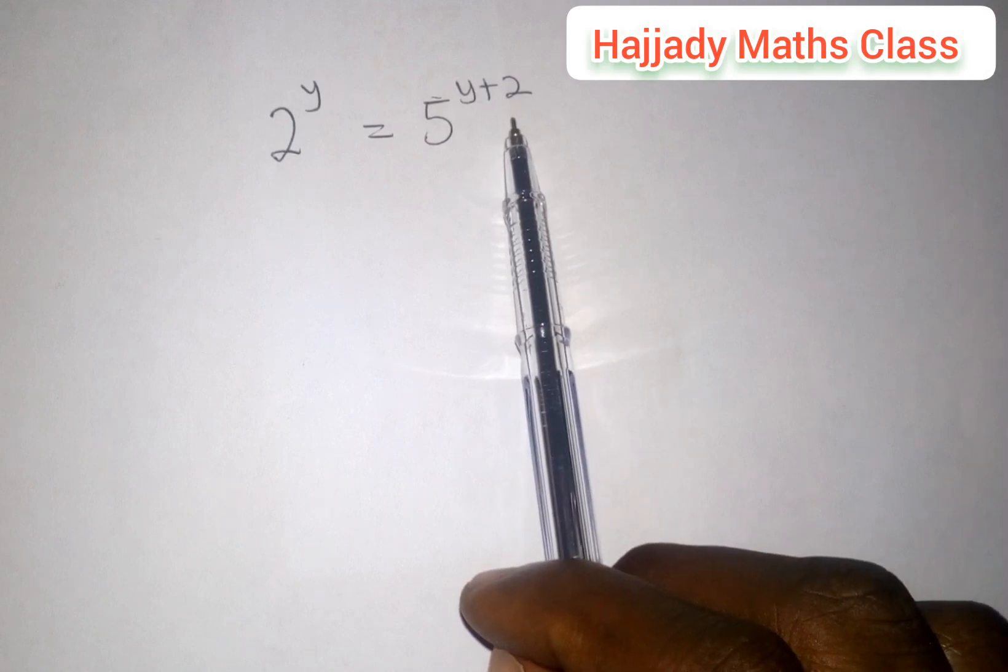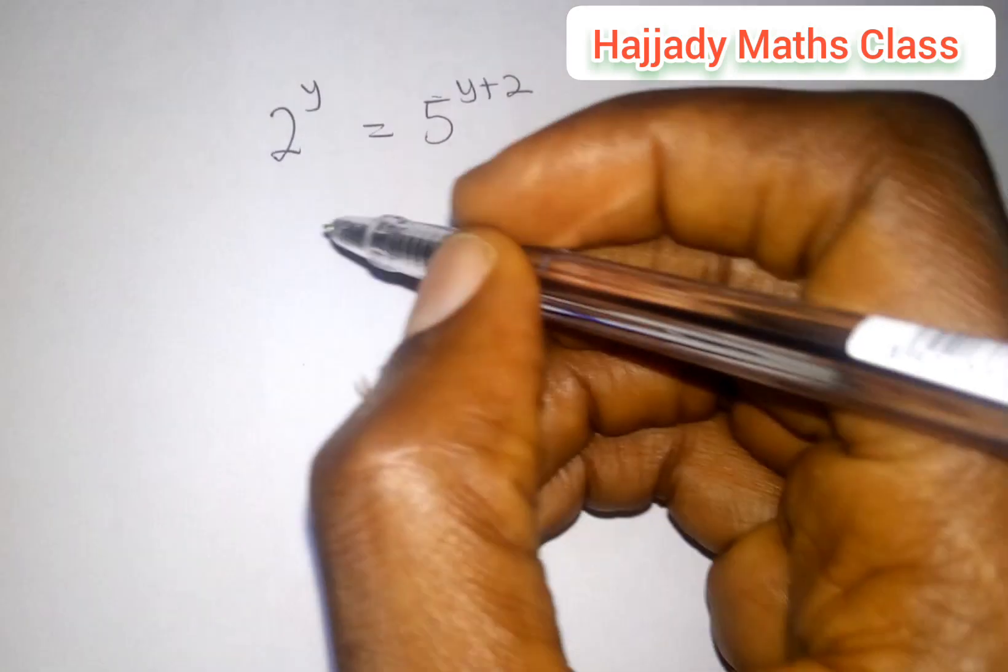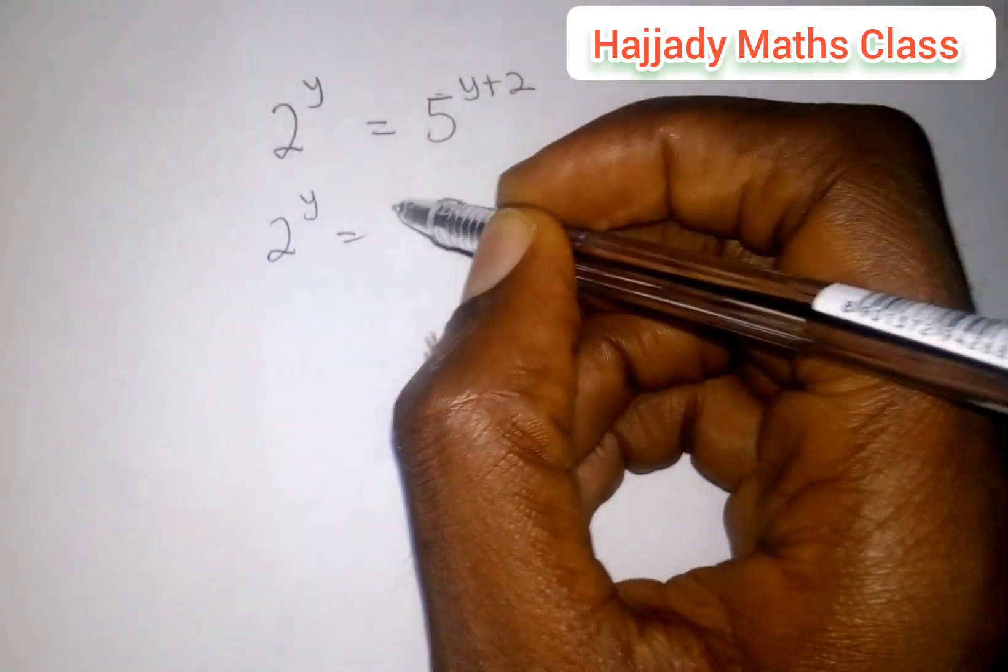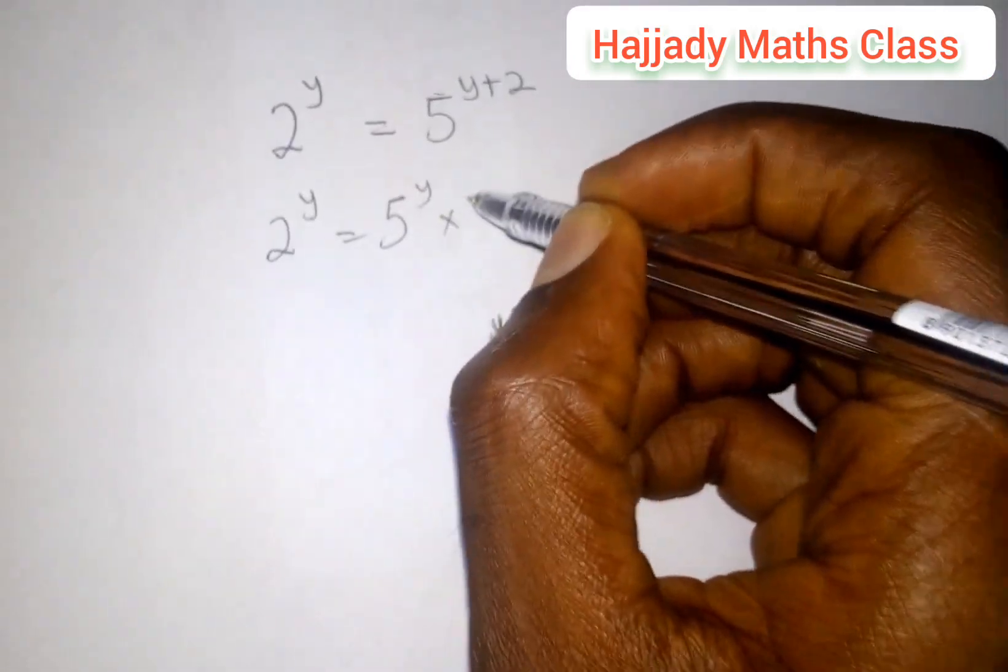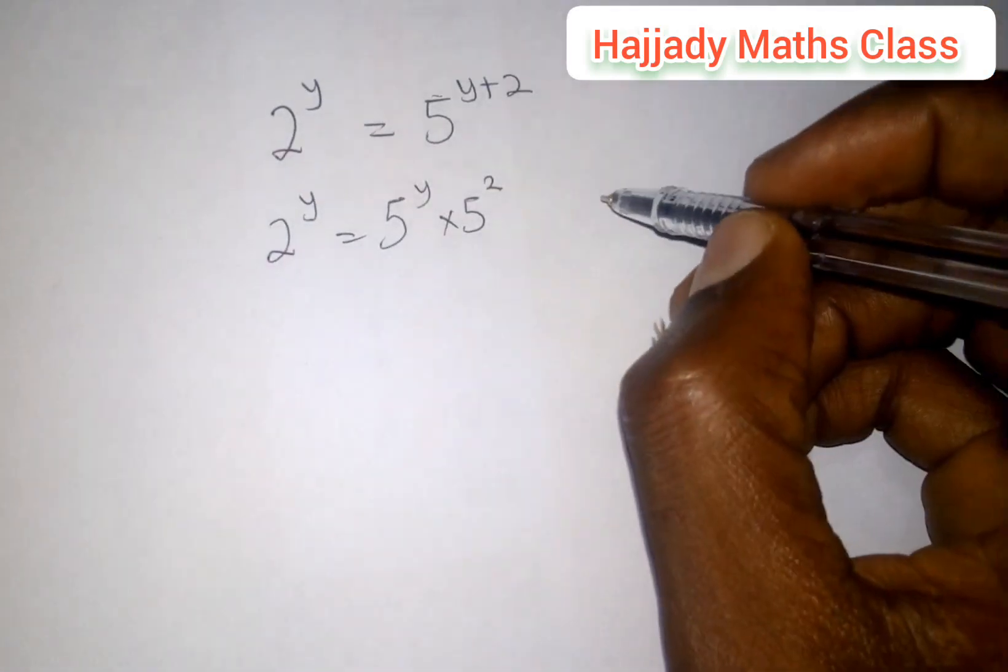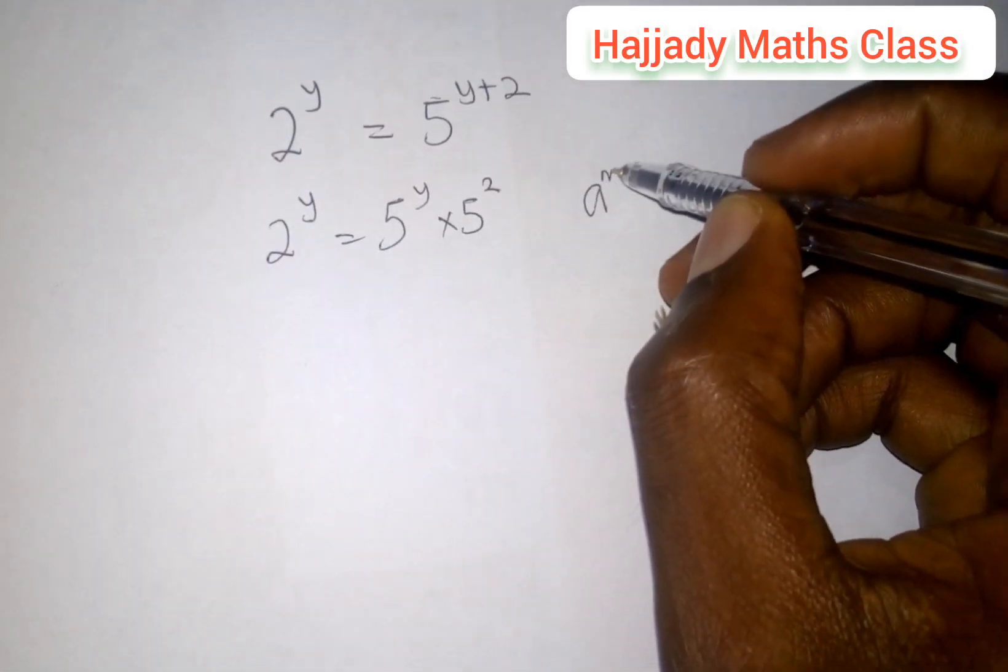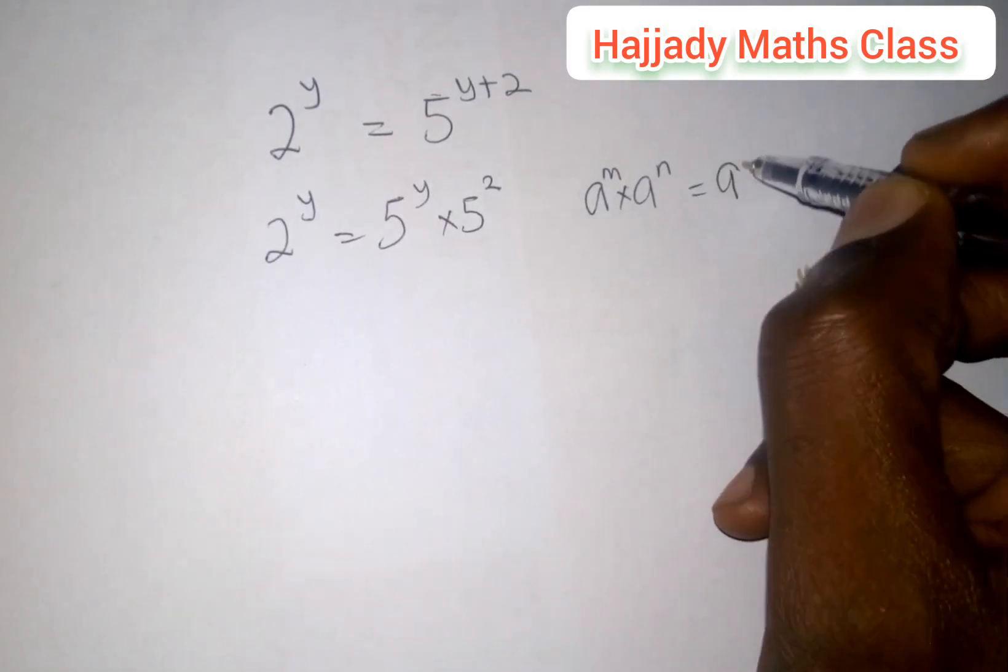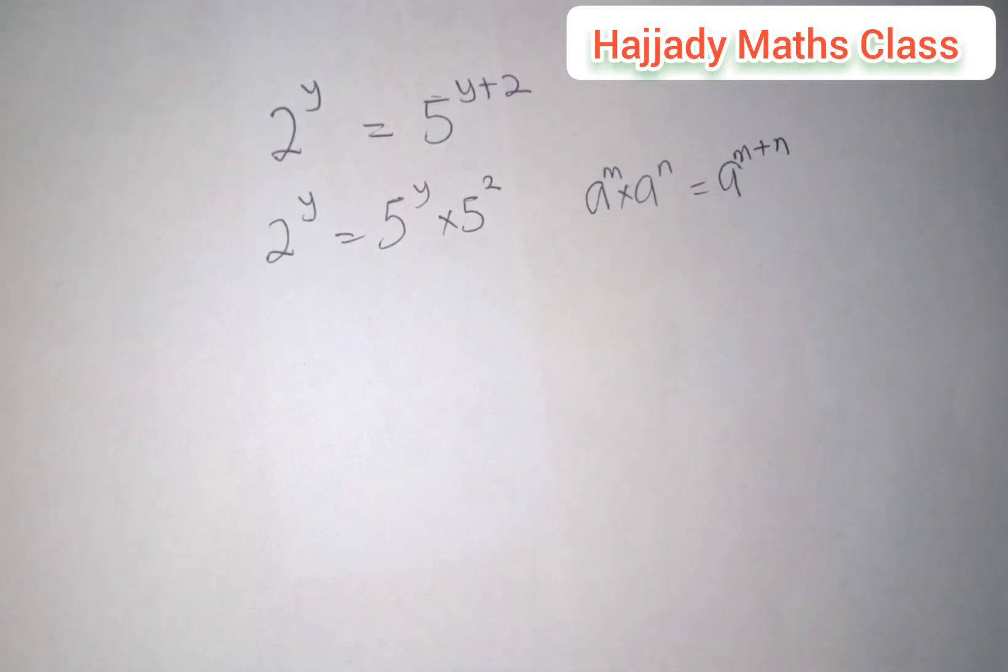For us to do this, we are going to apply the rule of indices. This will be 2 raised to power y equals 5 raised to power y times 5 raised to power 2. From the rule of indices, if you have a raised to power m times a raised to power n, this is the same as a raised to power m plus n. That is the product law.